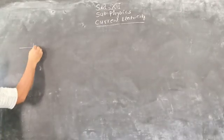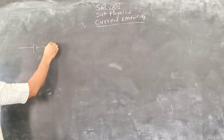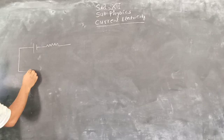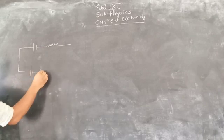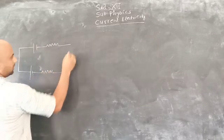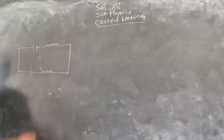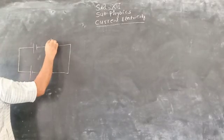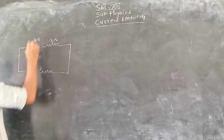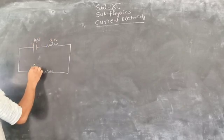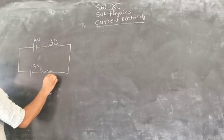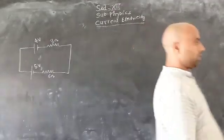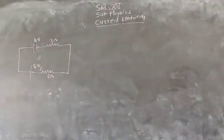This is a simple circuit problem. Suppose this is the circuit. This is a resistance of 3 ohm, this is 4 ohm, this is 5 ohm, and this is 6 ohm. Now we have to apply Kirchhoff's laws.